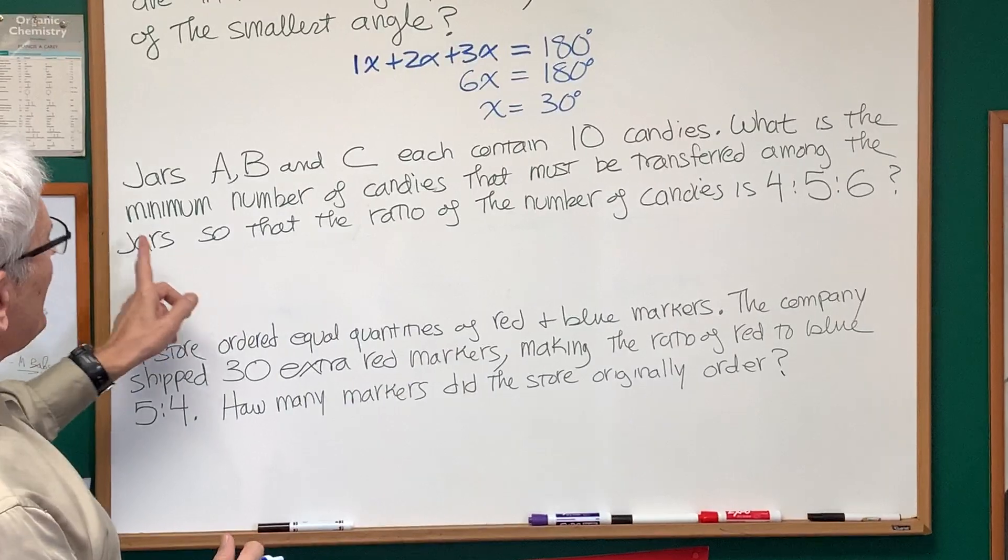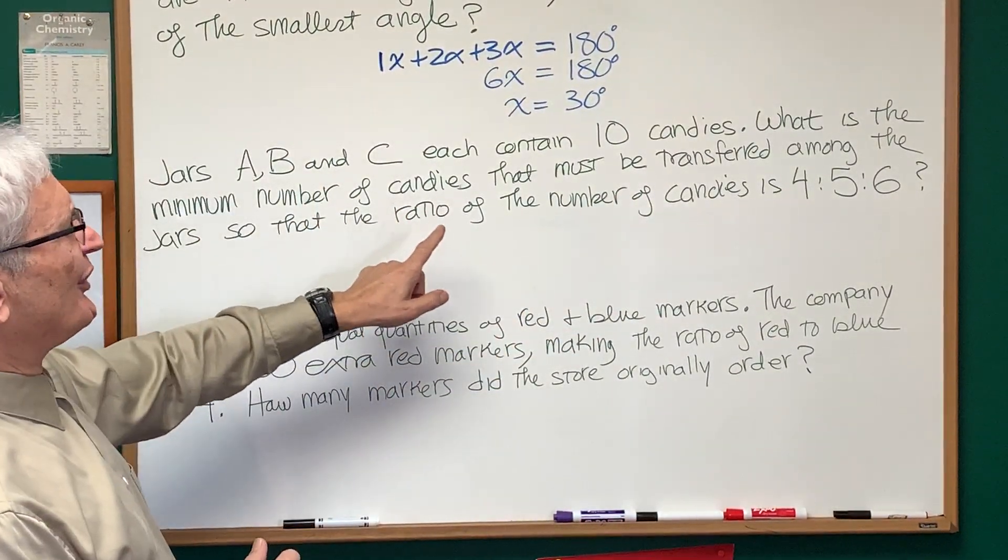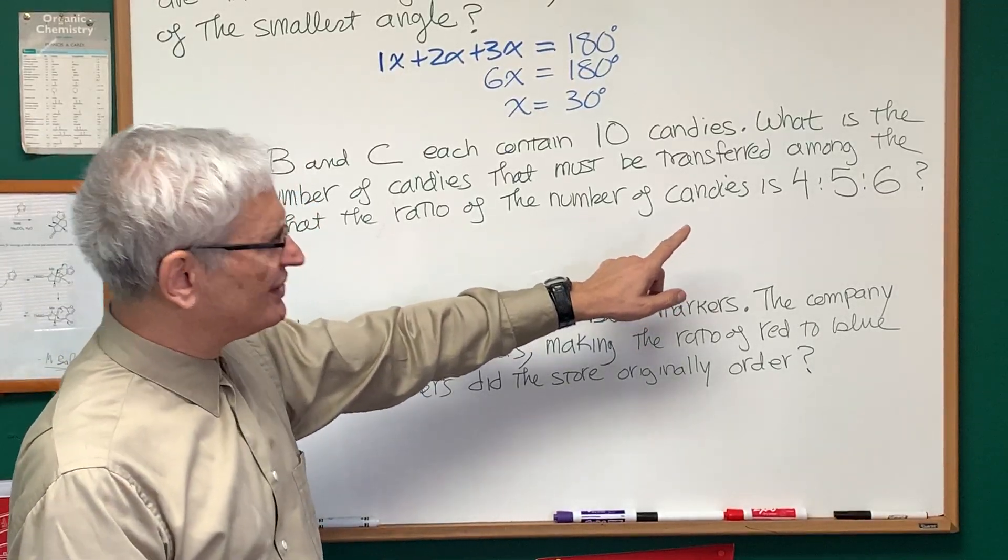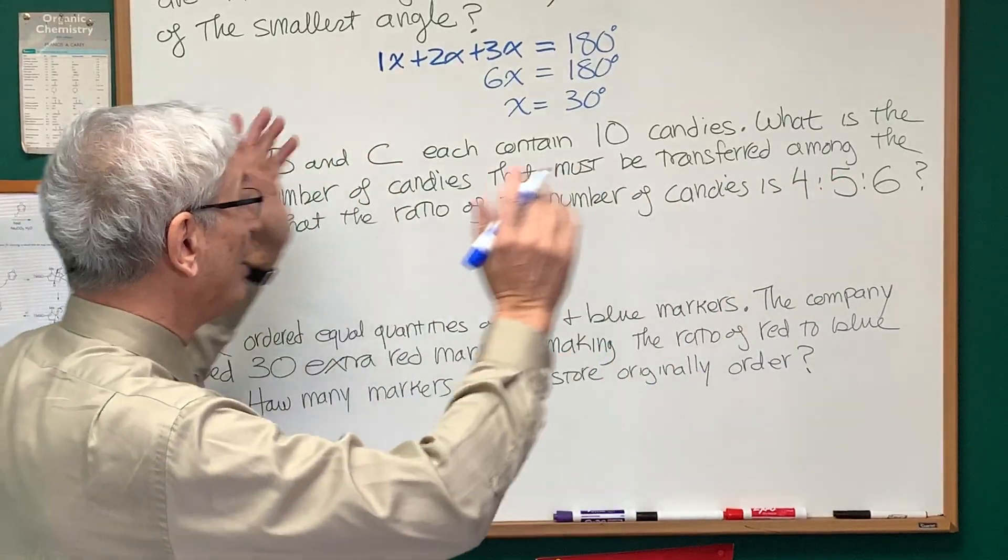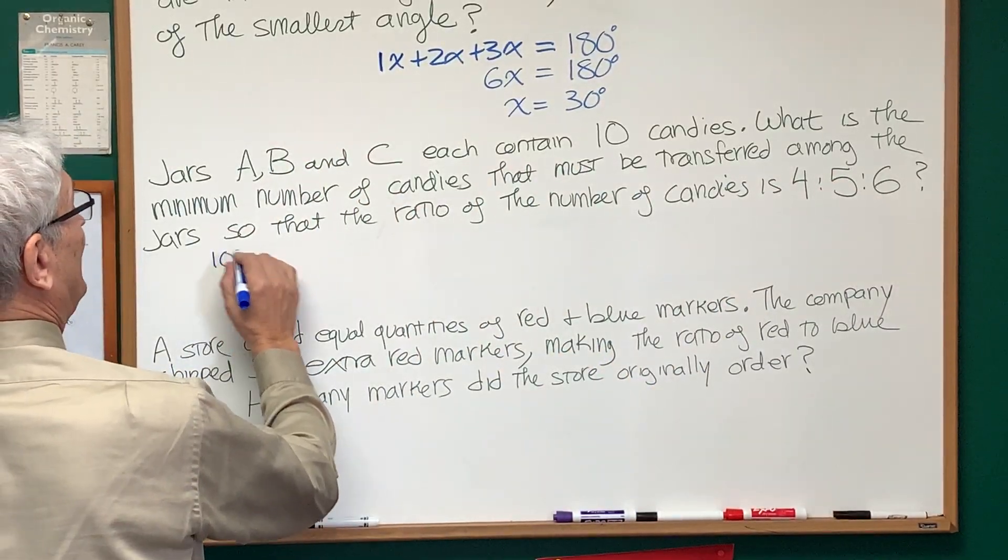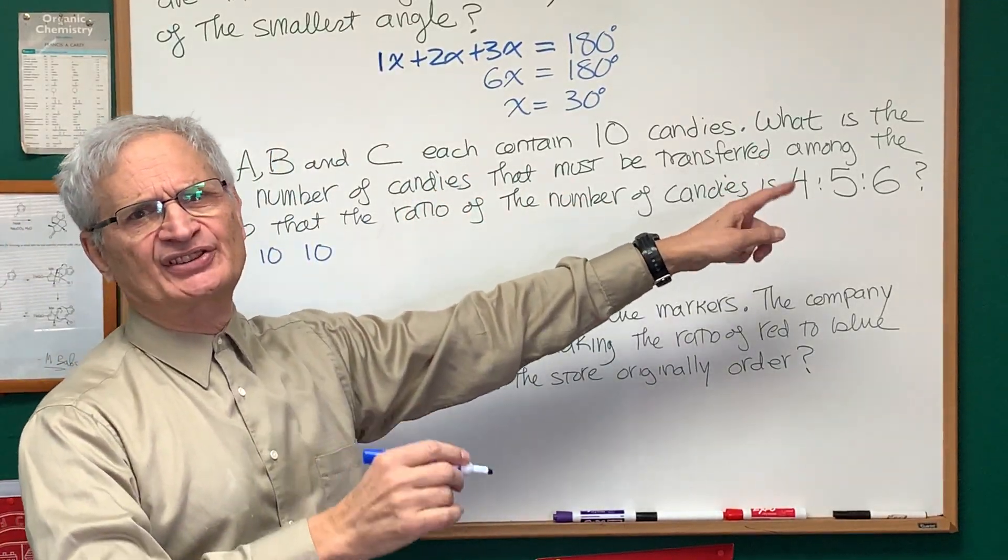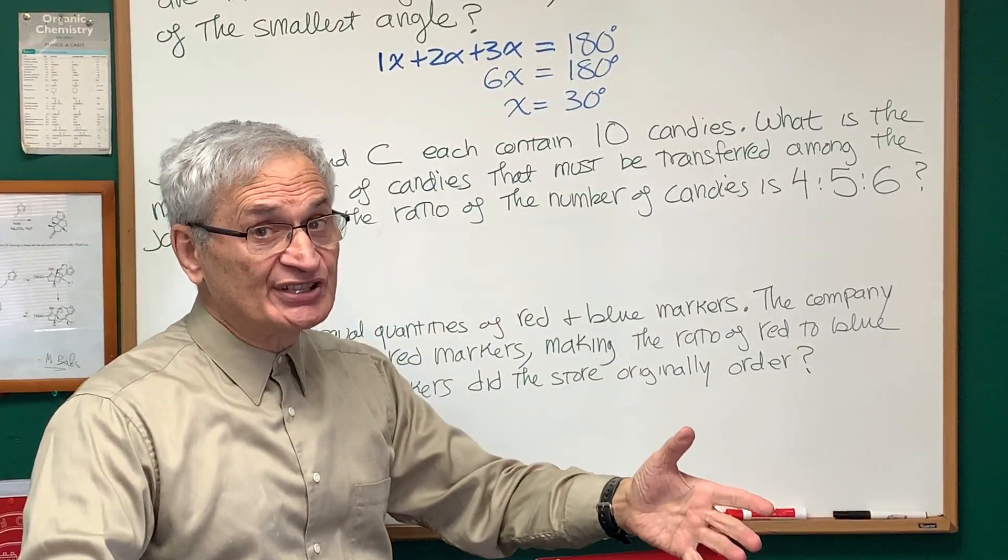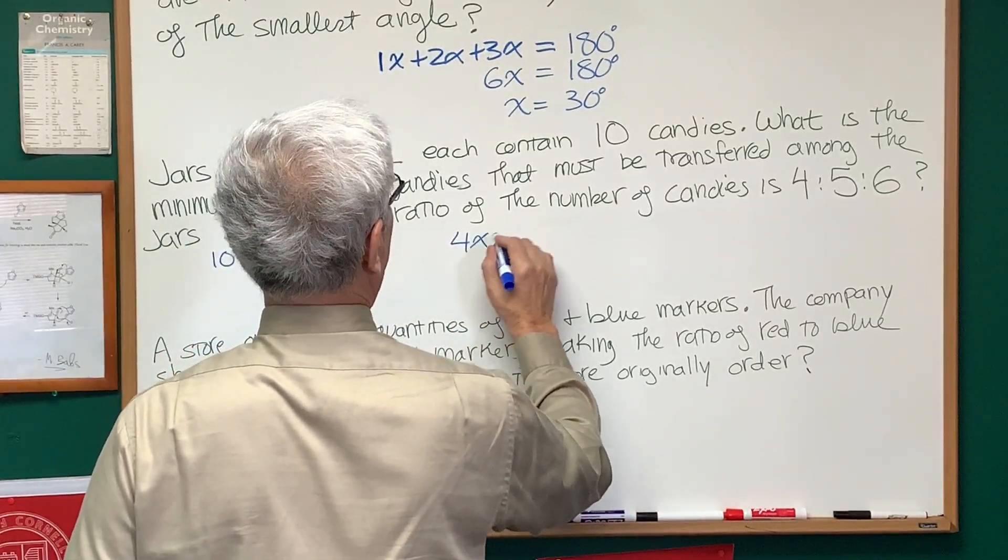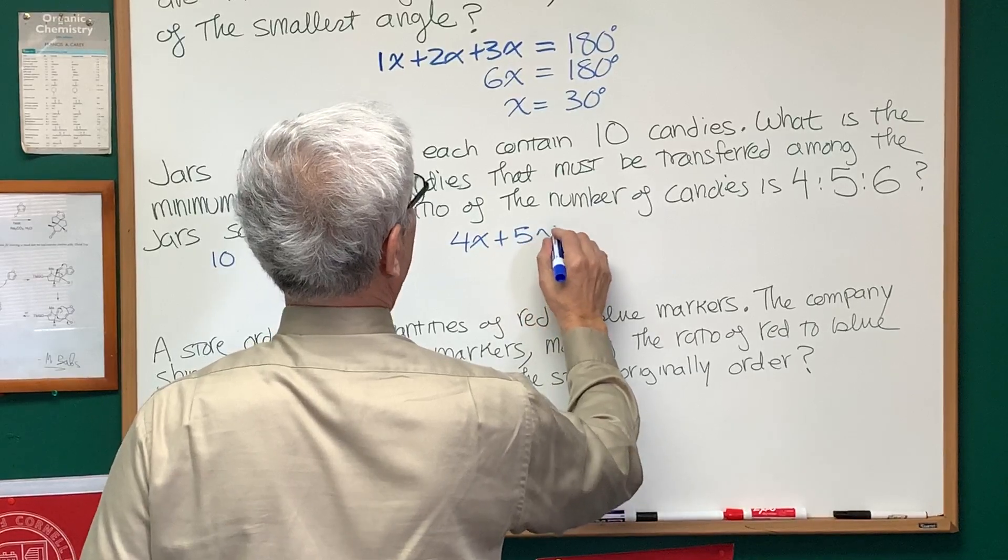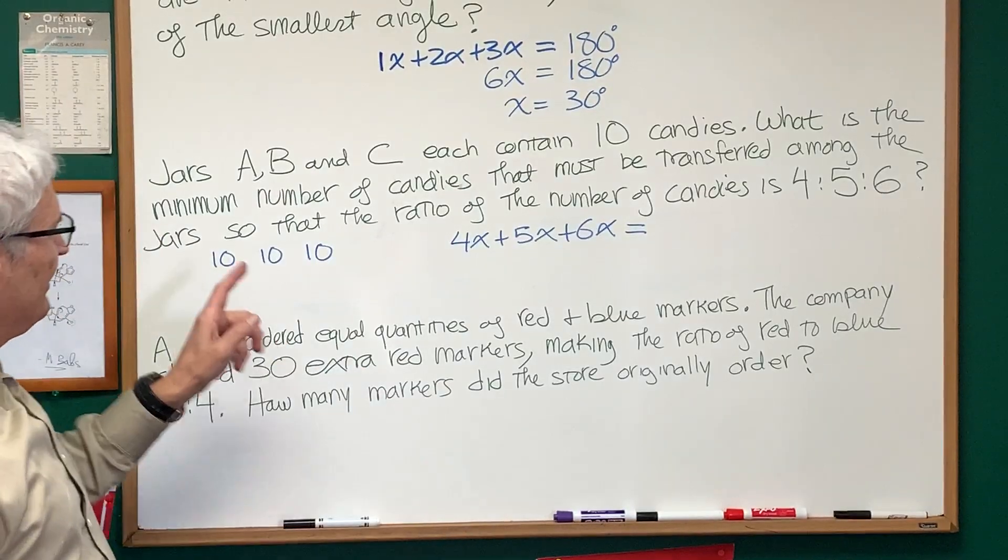What is the minimum number of candies that must be transferred among the jars so that the ratio of numbers of candies in the jars is 4 to 5 to 6? All right. Well, originally we had 10 and 10 and 10, but we want this ratio, 4 to 5 to 6. Constant of proportionality, we'll assign to x. So we have 4x plus 5x plus 6x equals, what's the total number of candies?